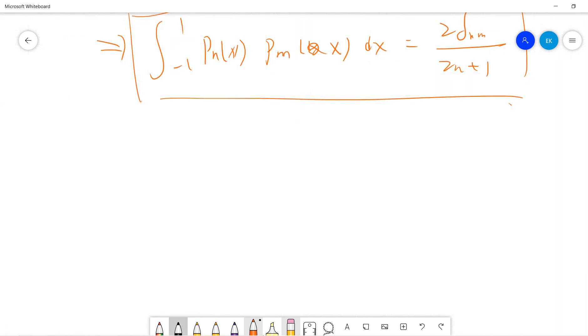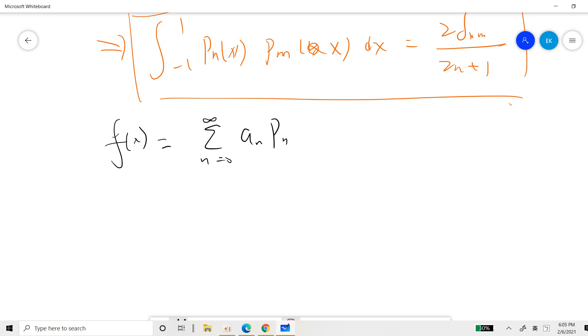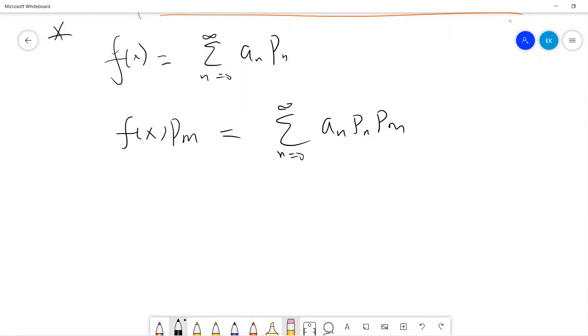So the next quick result is basically if somebody gives you a function f of x and tries to expand it into the Legendre polynomial, then the expansion is just sum of a_n P_n. And you do the integral dx from minus 1 to 1.